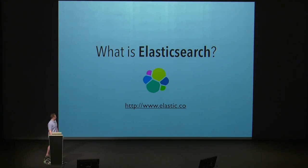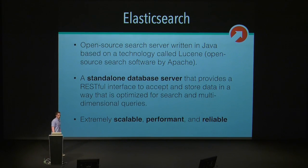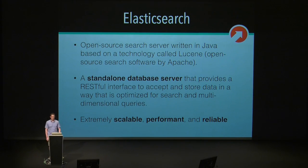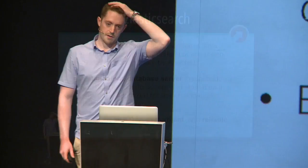So, what is Elasticsearch? Elasticsearch is open source software written in Java. It is based on a technology called Lucene, which is put out by the Apache Foundation. It is a standalone database server with a RESTful interface. It can accept and store data just like any other storage mechanism. Really the takeaway is it's a standalone database server separate from MySQL. It's extremely scalable, performant, and reliable, and it makes doing complex queries and search things much easier.